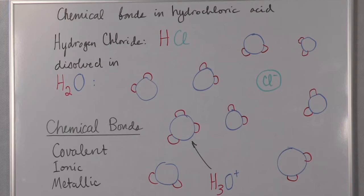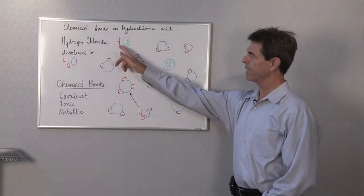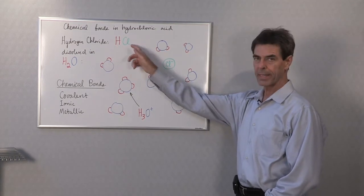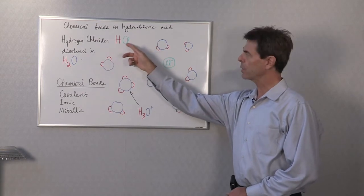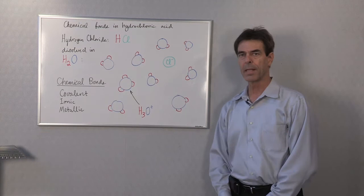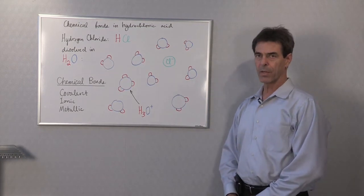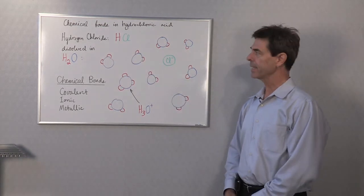Now HCl has a covalent bond because they share electrons. The hydrogen atom and the chlorine atom share an electron, but the electron is mostly towards the chlorine atom and less toward the hydrogen atom. So this is a polar covalent bond, and sometimes people say it's partially covalent and partially ionic.